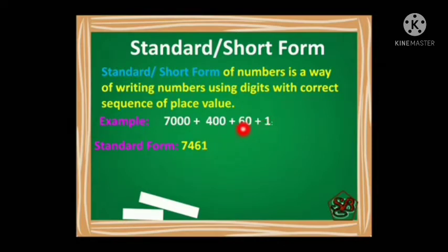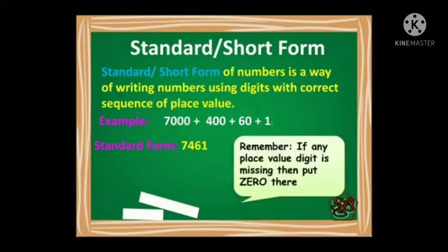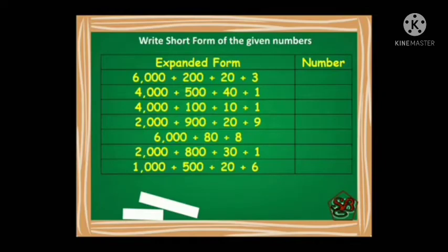One is at ones place, 60 is at tens place, 400 is at hundreds place, and 7 is at thousands place. Remember, if any place value digit is missing, then we put zero there. Let's make it more clear with some more examples. Here are the expanded forms given to us and we have to write the short form.